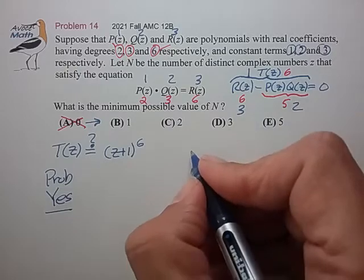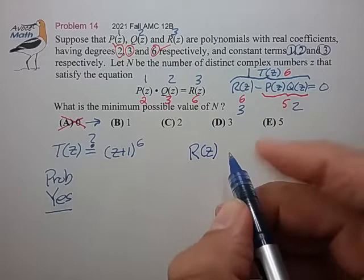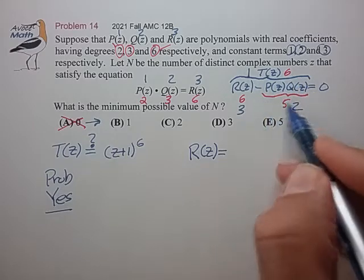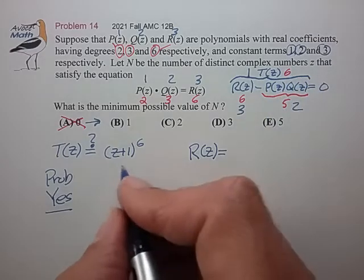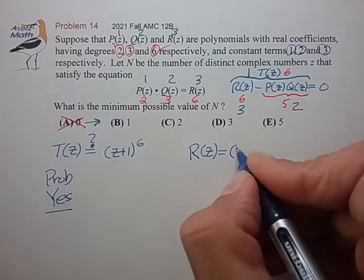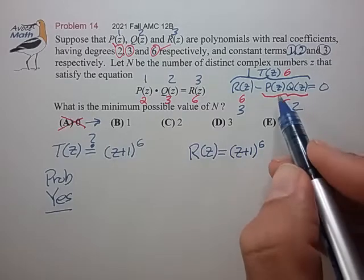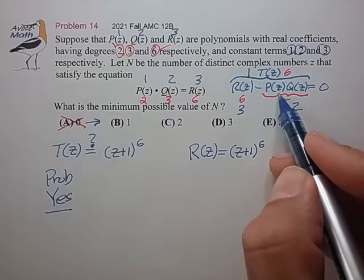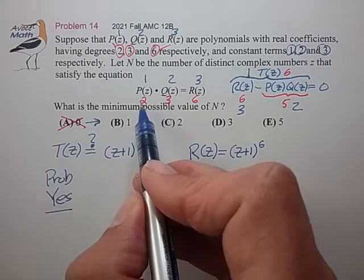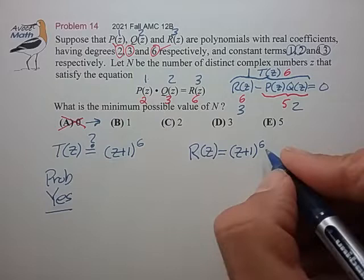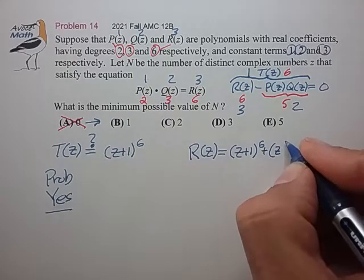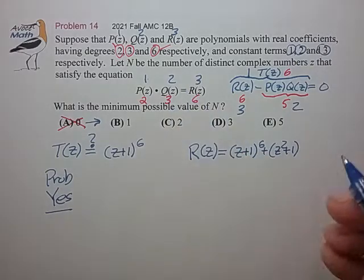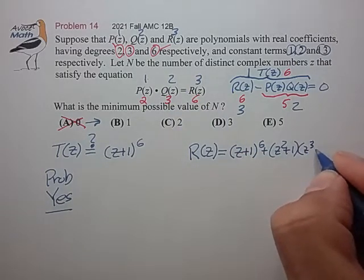So if I choose R(z) to have this form plus some extra terms that I'm just going to subtract in the formation of T(z), maybe that's the right approach. So what if I let R(z) equal T(z) plus some extra terms that I'm just going to subtract in this expression? So the terms that I would add is something that would look like P(z). So that would be a polynomial of degree 2 with constant 1. So that would be something like z squared plus 1. And Q(z) would be a polynomial of degree 3 with constant 2.